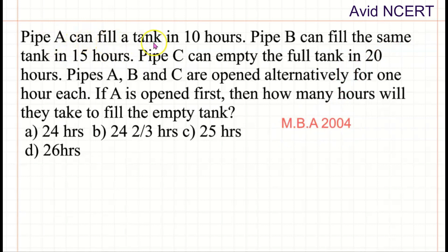Pipe A can fill a tank in 10 hours. Pipe B can fill the same tank in 15 hours. Pipe C can empty the full tank in 20 hours. Pipes A, B and C are opened alternatively for 1 hour each. If A is open first, then how many hours will they take to fill the empty tank?